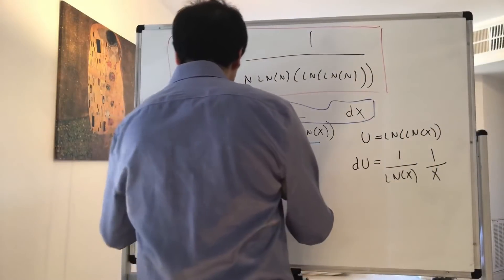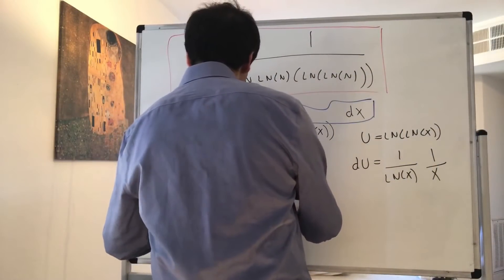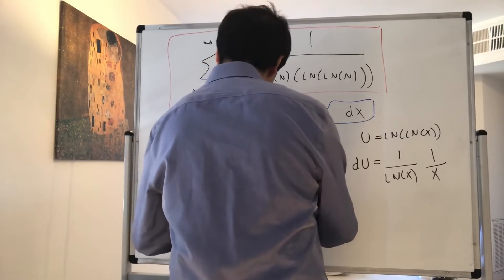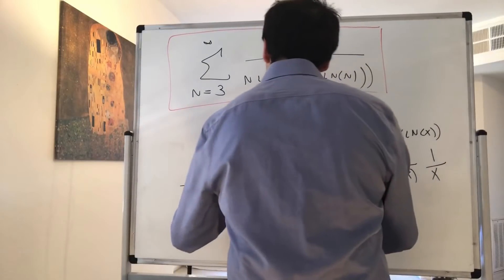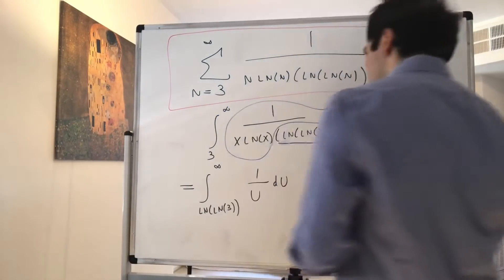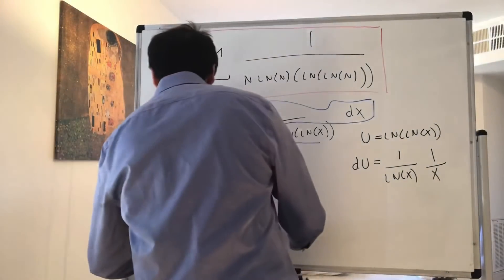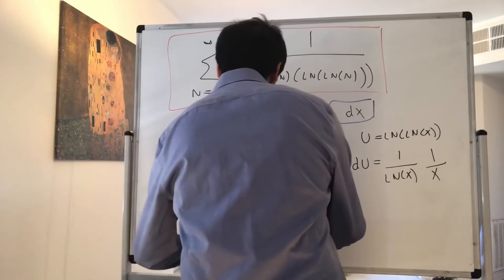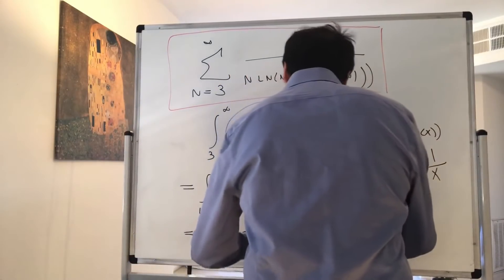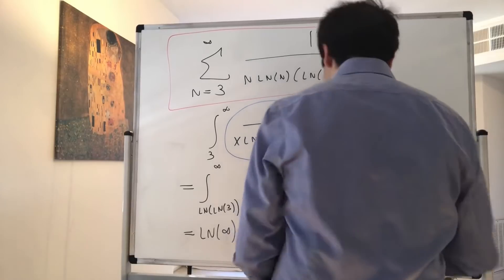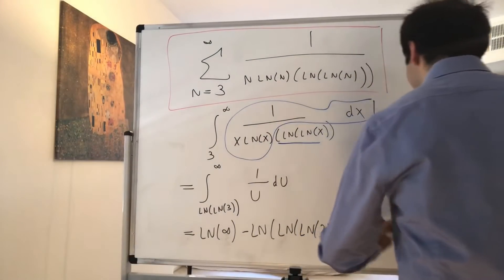So this integral simply transforms to the integral of ln of ln of 3 to infinity of 1 over u du, which diverges, because this just becomes ln of infinity minus ln of ln of 3. ln would be so proud, okay, and that becomes infinity.